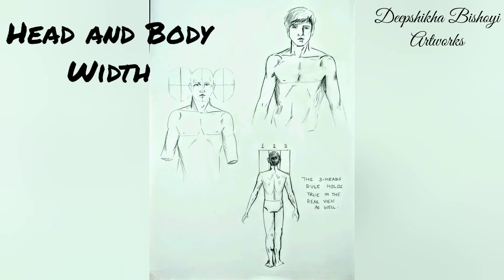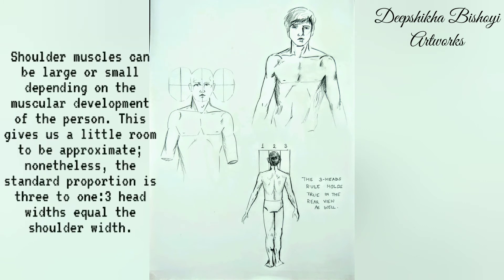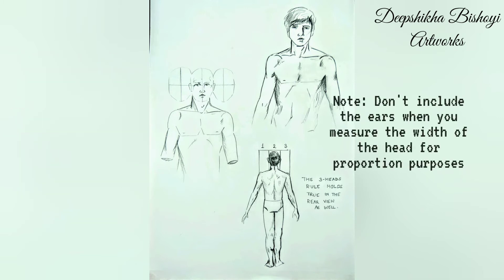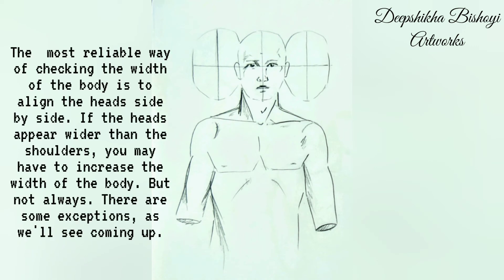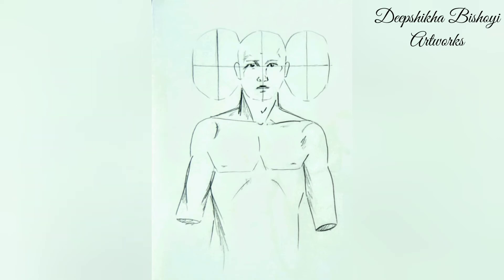Head and body width: shoulder muscles can be large or small depending on muscular development, which gives us a little room to be approximate. Nonetheless, the standard proportion is three to one — three head widths equal the shoulder width. Note: do not include the ears when measuring the width of the head for proportion purposes. The most reliable way of checking the width of the body is to align the heads side by side. If the heads appear wider than the shoulders you may need to increase the width of the body, though there are some exceptions. This three-heads rule holds true in the rear view as well.